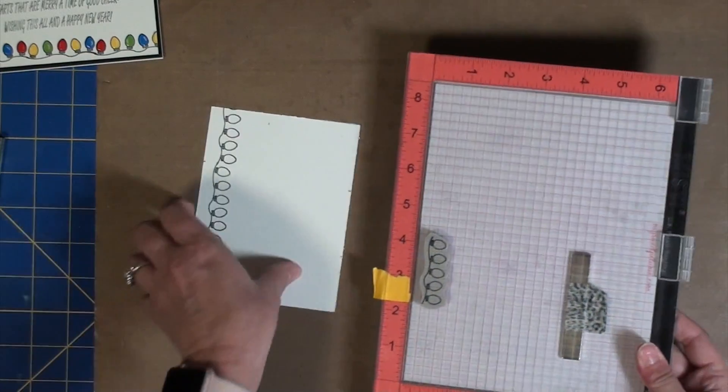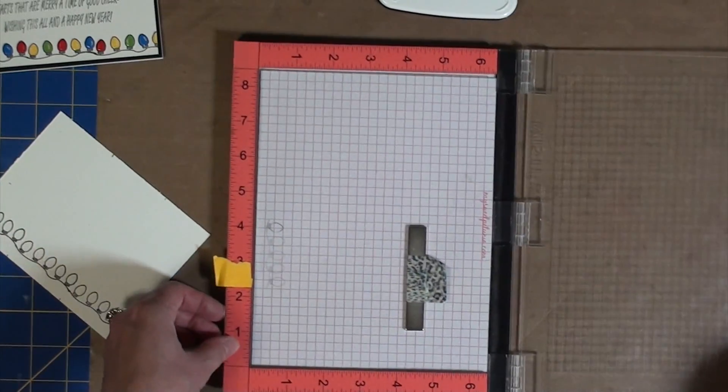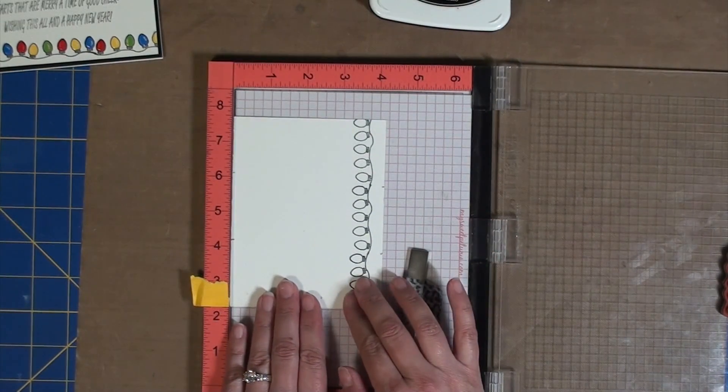And next I'll move to the MISTI and start the stamping process. And the key thing here is to make sure that you're lining it up each and every time you stamp.